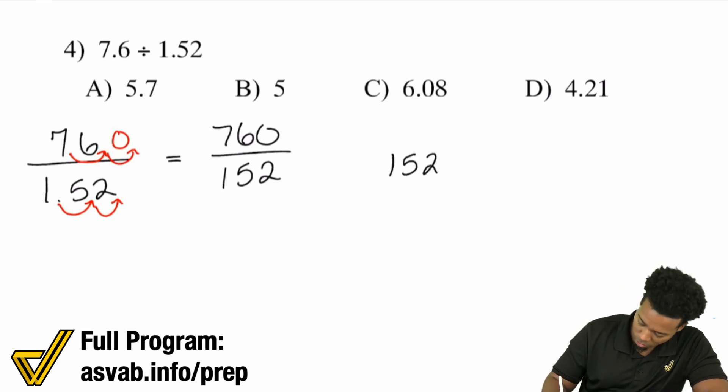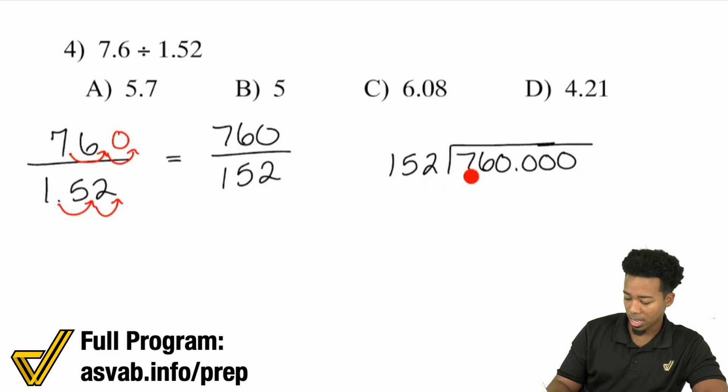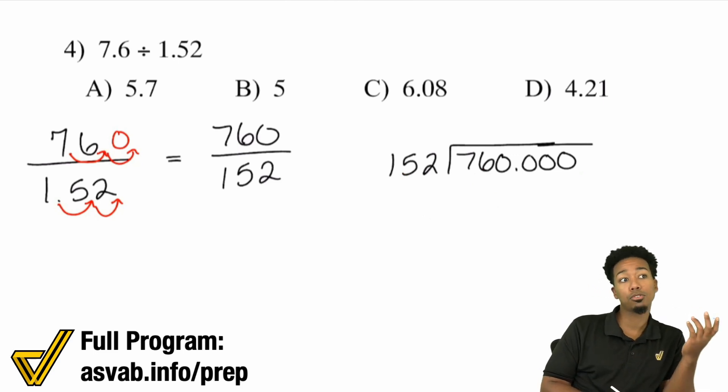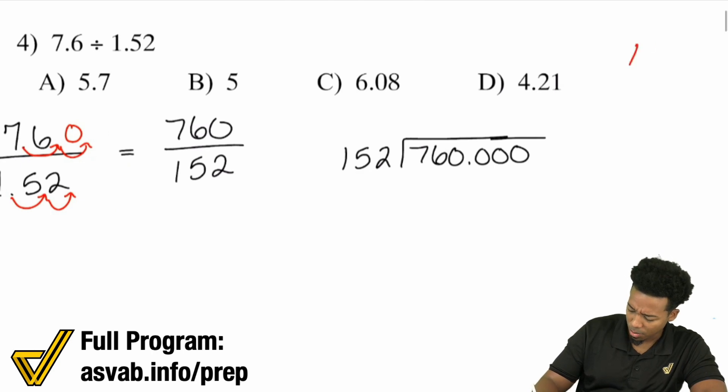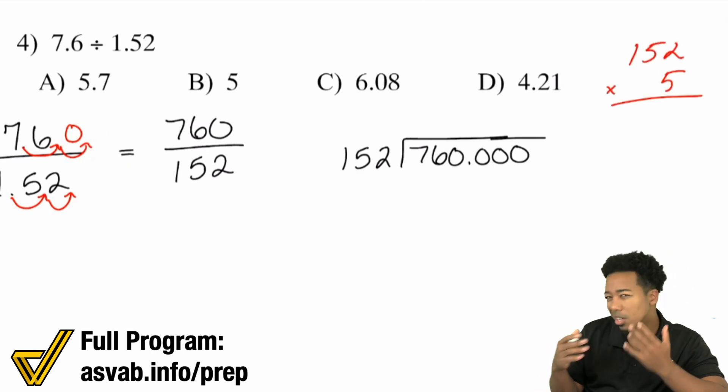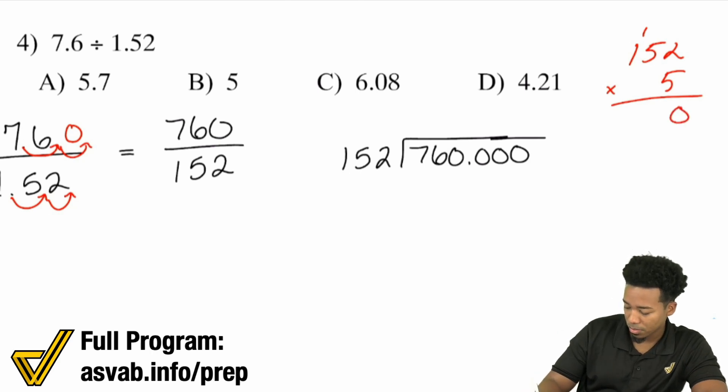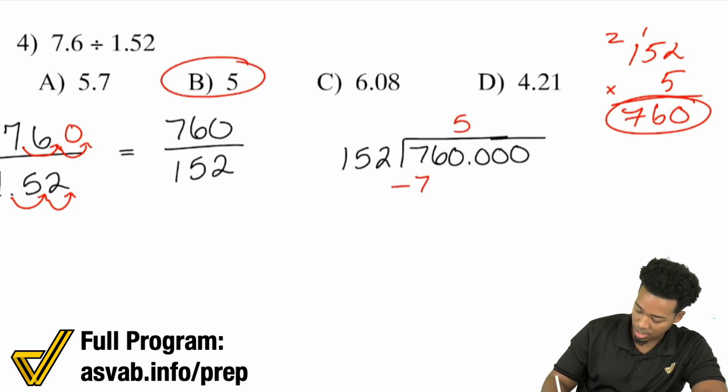Essentially, when I move it twice, I'm multiplying by 100 because that's 52 hundredths. So to get rid of the hundredths place, multiply by 100. That's what multiplying by 100 really is. Do the same up top. Put a zero right there. So this turns into 760 divided by 152. This we can get behind. 152 can't go into 7, can't go into 76, but it can go into 760. If you multiply 152 by 5, you get 760. So we found that the answer is 5. It's clean, and you're done.